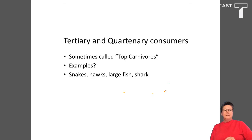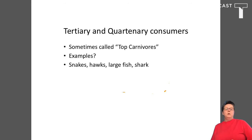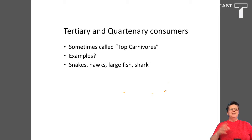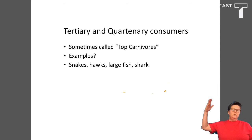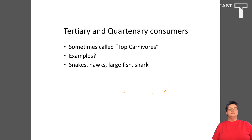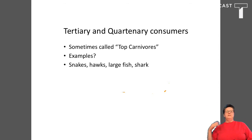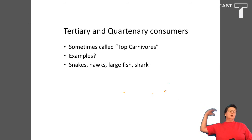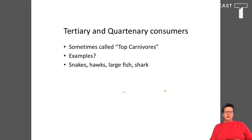Tertiary and quaternary consumers are the ones feeding on secondary consumers — higher up on the food chain. Sometimes these are called the top carnivores. Those animals that feed way up at the top include snakes, hawks, larger fish, and sharks — all examples of tertiary and quaternary consumers.